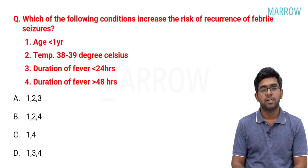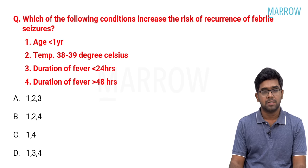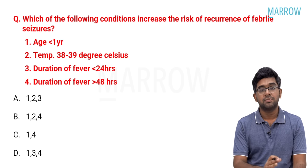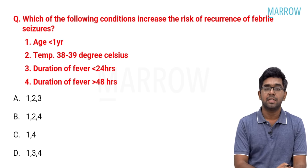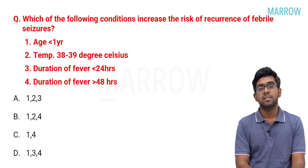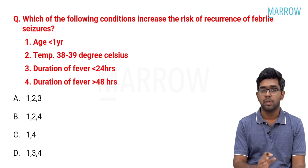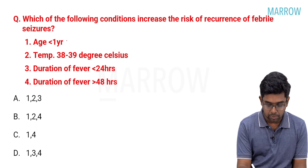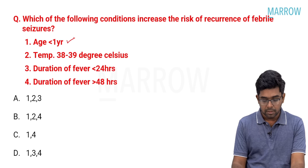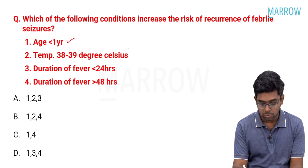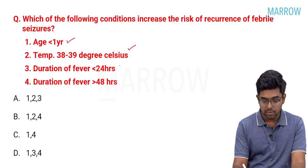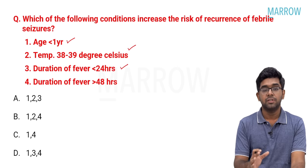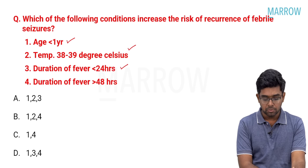Moving on: which of the following condition increases the risk of recurrence of febrile seizure? This is a standard question. They asked about risk factors for recurrence — taken directly from Nelson's textbook of paediatrics. Age less than 1 year is a major risk factor. Temperature of 38 to 39 degrees Celsius is also an important risk factor. Duration of fever less than 24 hours is also an important risk factor — most children with febrile seizure develop seizure within the first 24 hours of onset of fever.